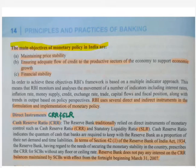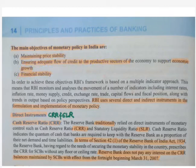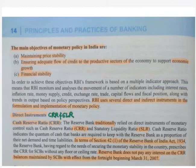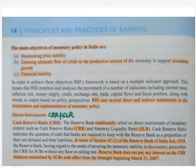The main objectives of monetary policy are maintaining price stability, ensuring adequate flow of credit to productive sectors for economic growth, and financial stability. The RBI uses several direct and indirect instruments in the formulation and implementation of monetary policy. For example, they may ask which of the following is a direct instrument used by RBI for implementation of monetary policy, giving options like CRR, SLR, repo rate, reverse repo rate, and bank rate.